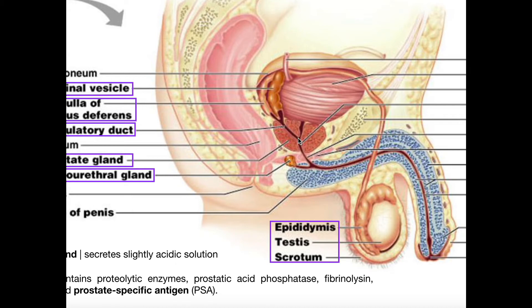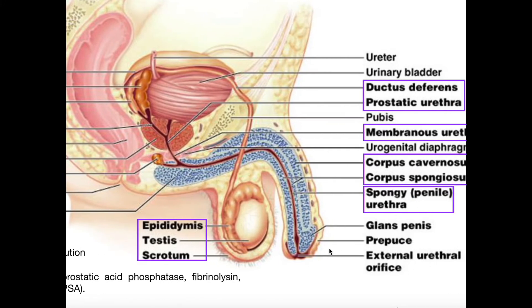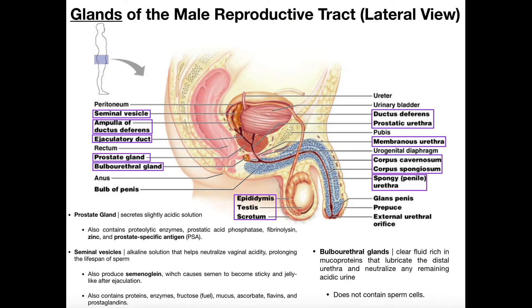As sperm moves through the ejaculatory duct and merges into the prostatic urethra, the prostate adds more secretions. At that point, we can call the final secretion semen. Remember, semen is not the cells themselves — semen is a solution that contains many things, including those sperm cells. Then it moves through the membranous urethra, into the spongy urethra, and eventually out the external urethral orifice. That is the flow of semen and sperm during ejaculation, and that's something very important to know.